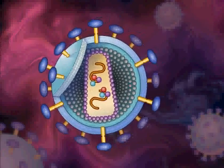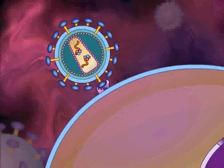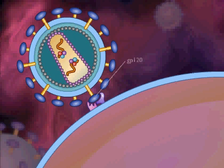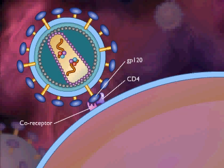To establish infection, HIV must first attach to its host cell. Attachment occurs by interaction between GP120 on the surface of the virus and the CD4 antigen receptor on the surface of the host cell. In addition to the CD4 receptor, there must also be a coreceptor on the host cell. The coreceptor differs for different host cell types. In T lymphocytes, the coreceptor is called CXCR4, whereas on macrophages, the coreceptor is called CCR5.